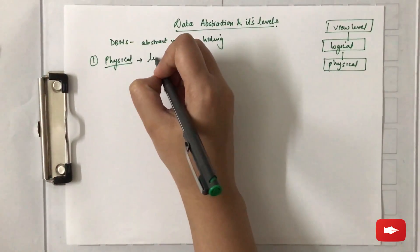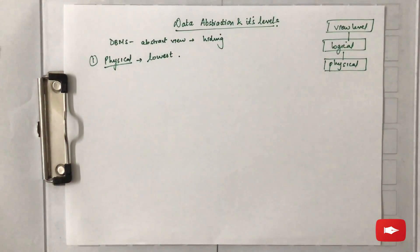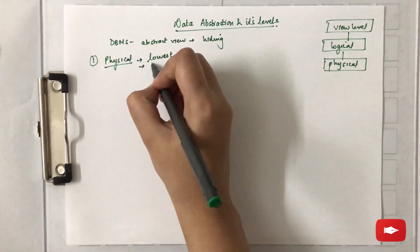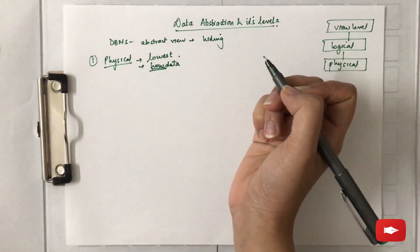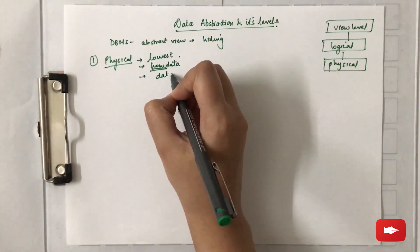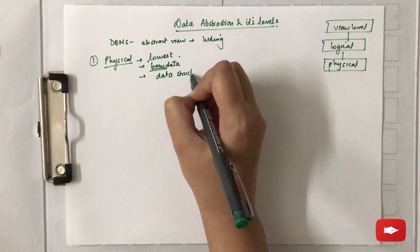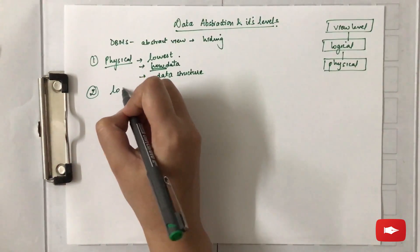It is the lowest level of data abstraction in a DBMS, which describes how the data is actually stored. Focus on how the data is stored - that is, it describes the data structure in detail.